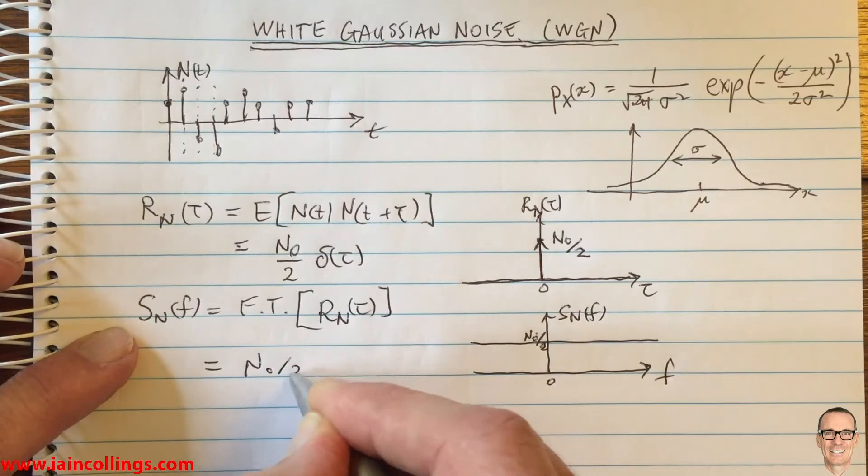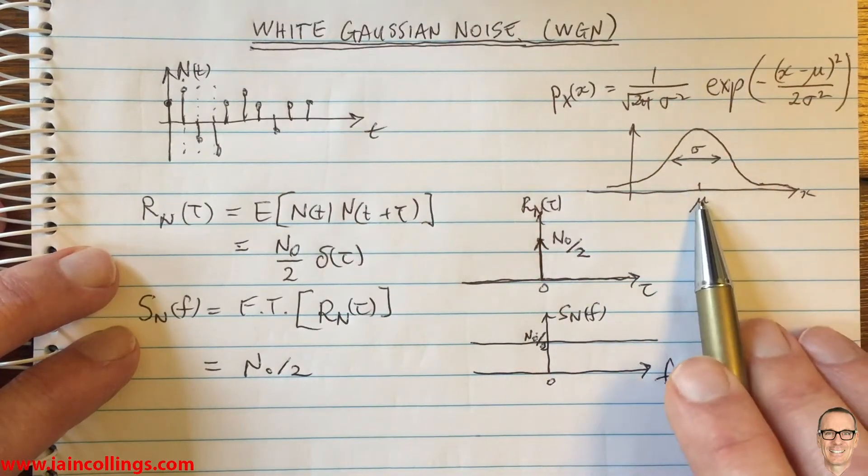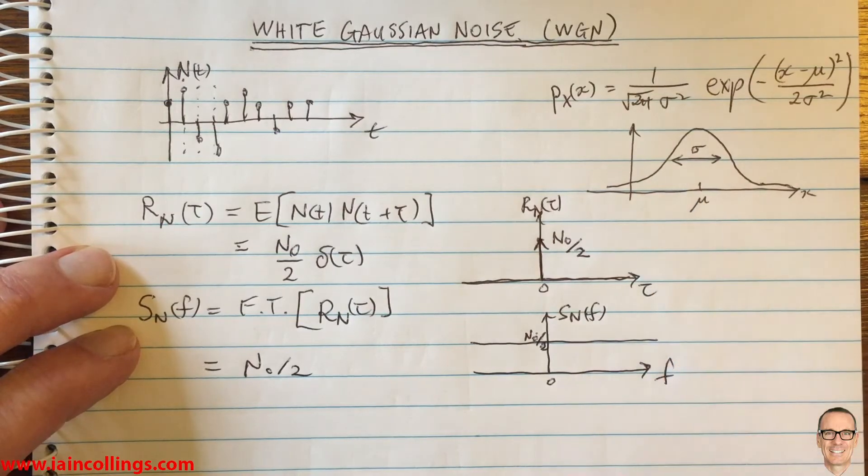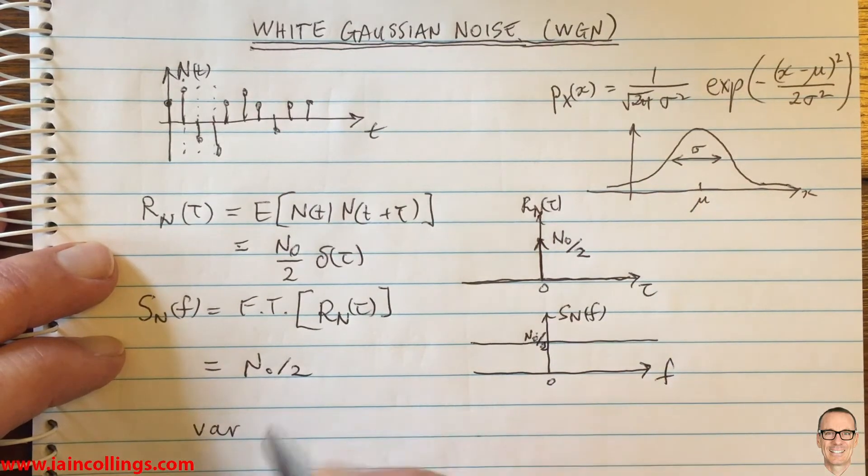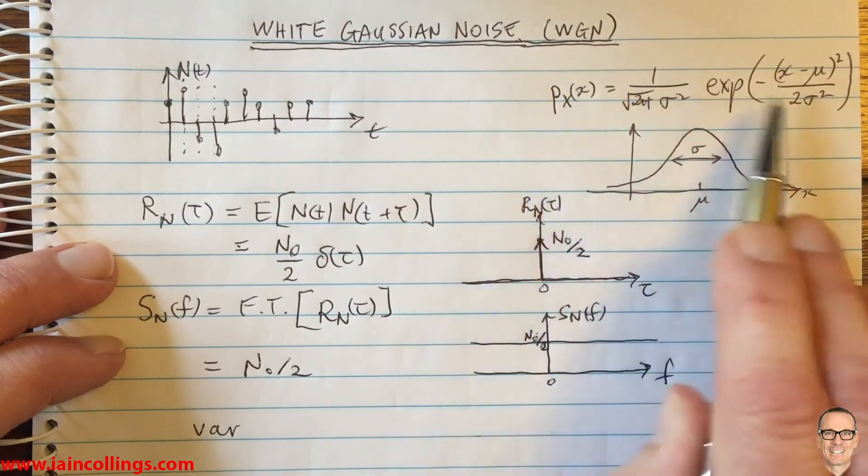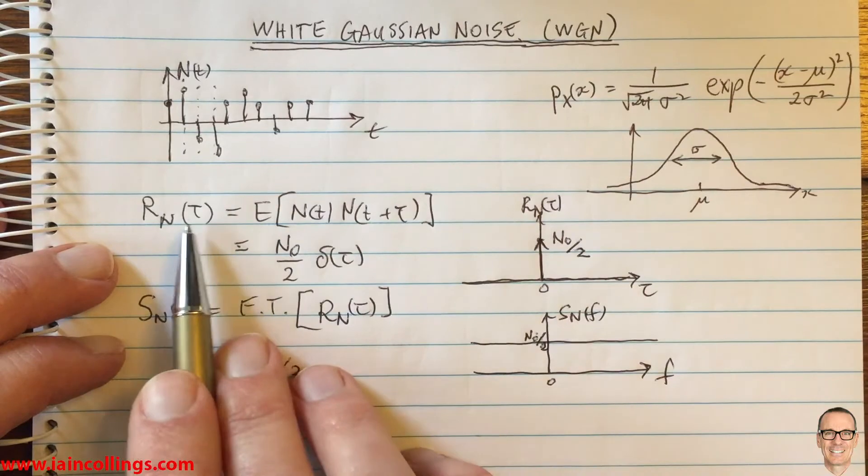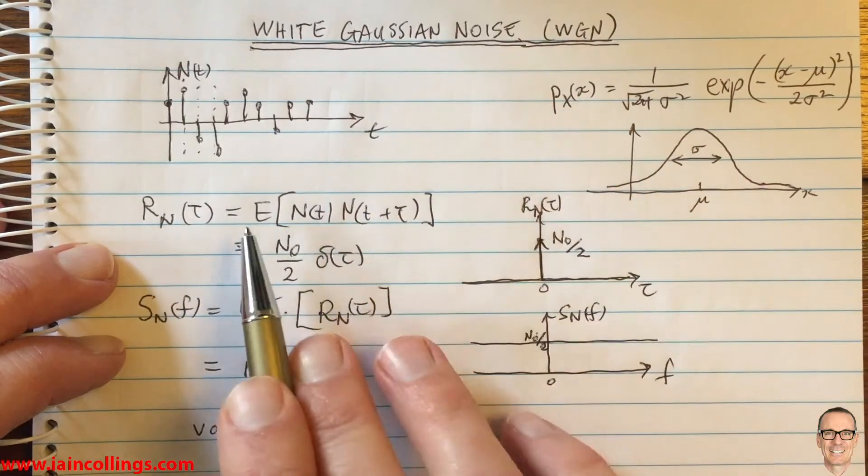Just the last thing to close the loop for the Gaussian part - with the mean equals zero, we know that the variance of the random variable is... I've used x over here because this is a general distribution, but of course when we use n instead of x and set mu equal to zero, then the variance we know is equal to sigma squared for the Gaussian shape.